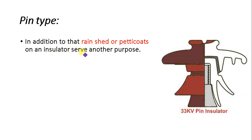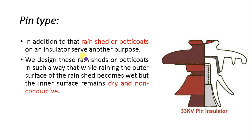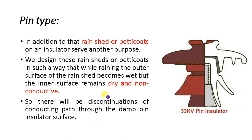In addition to lengthening the leakage path, petticoats on insulators serve another purpose. They are designed such that while the outer surface of the rain sheets becomes wet, the inner surface remains dry and non-conductive. When rain drops fall, the outer surface of the petticoats becomes wet but the inner surface stays dry and non-conductive. That is why the upper part is bigger than the lower part.